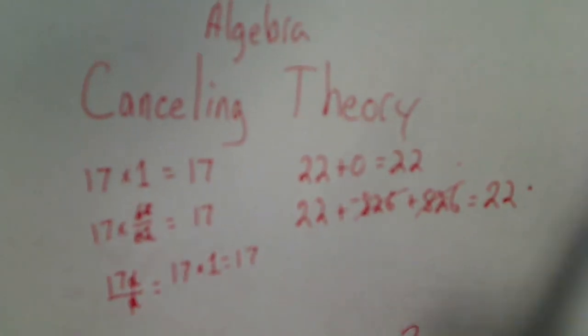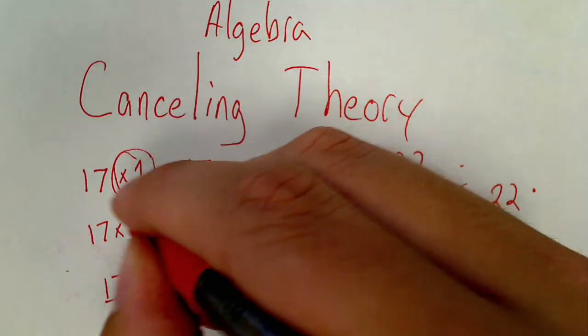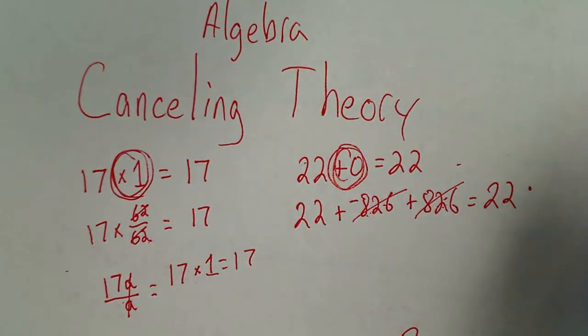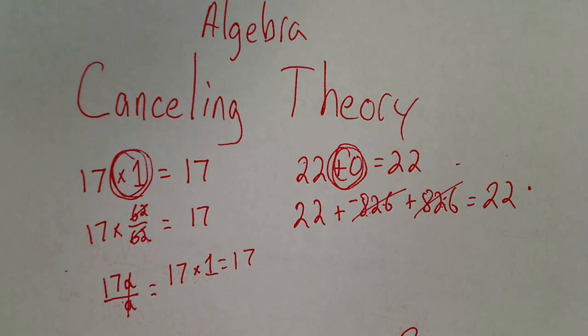The whole trick to this is multiply by 1, add by 0. We're using that alongside the rule that anything we do to one side we'd do to the other. And that is how we're simplifying our equations. That is what canceling means.